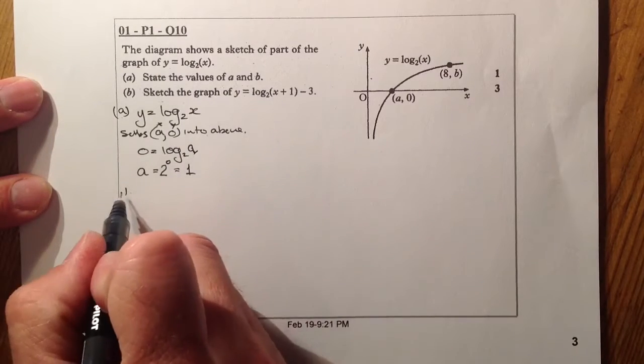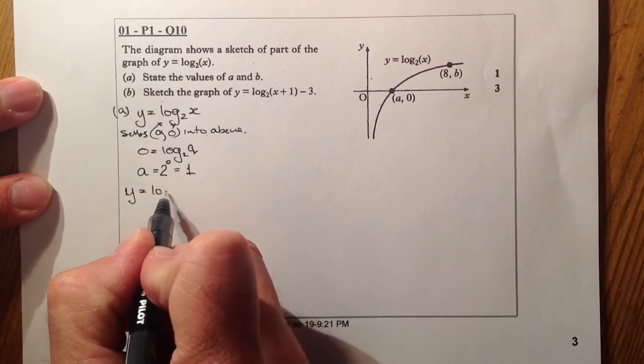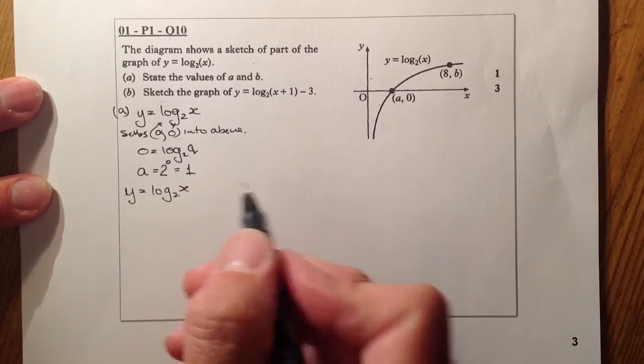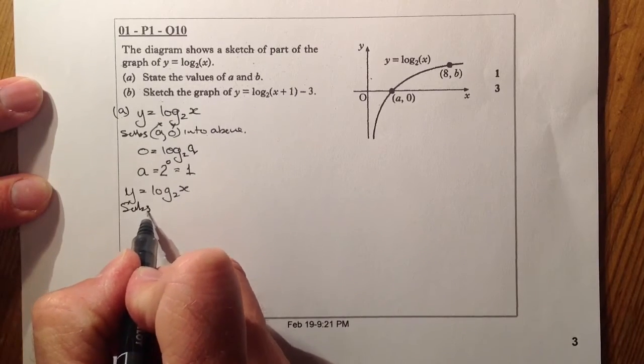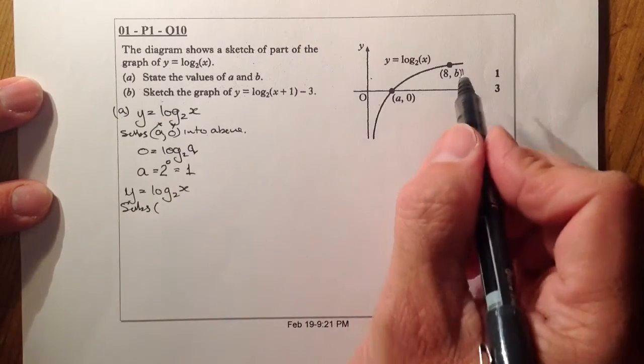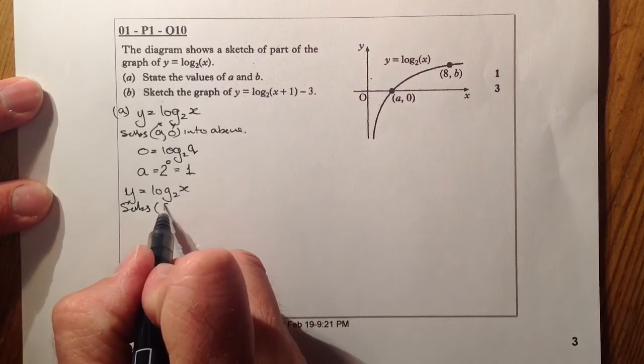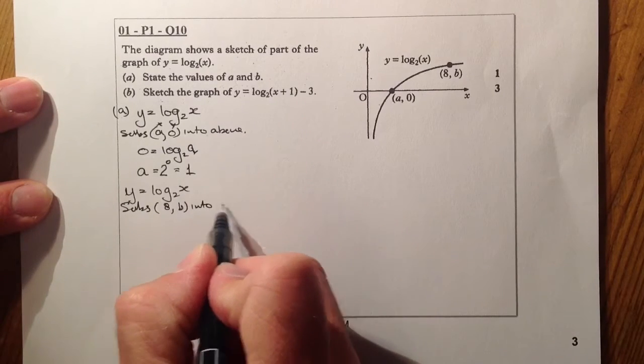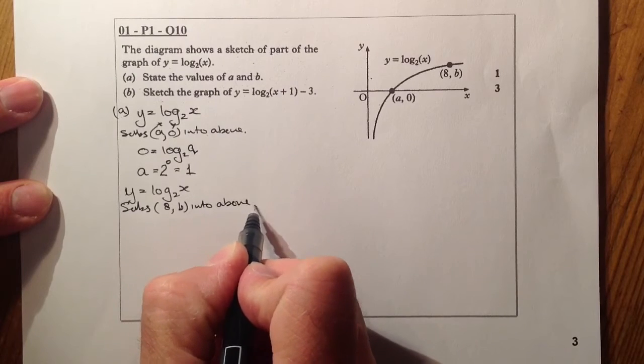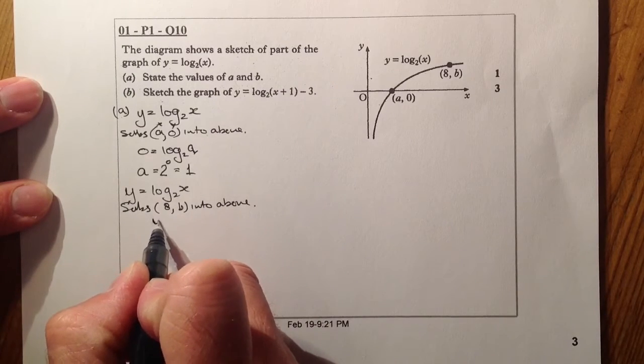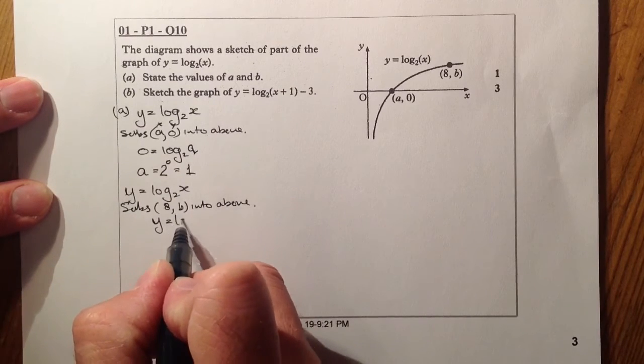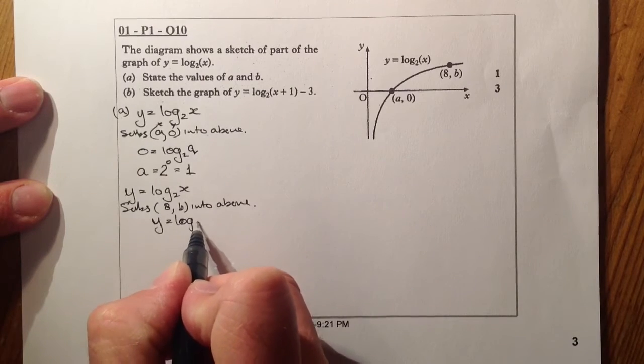For the next part, we'll do the same thing. We'll substitute in the next point, the point 8b, into the same equation. So we'll start off with y equals log 2x.